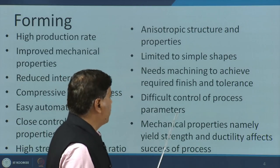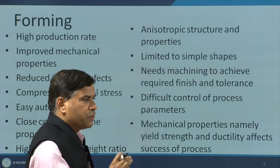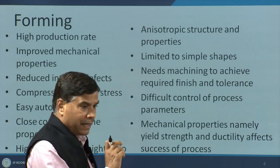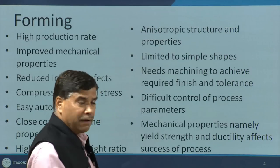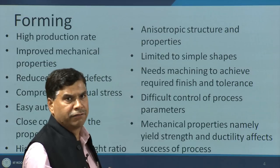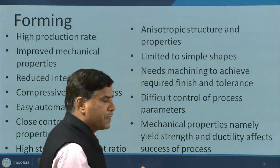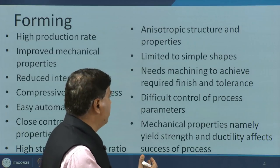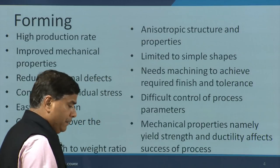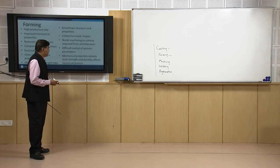Difficult control of process parameters is another limitation since the process is deformation based. We need to control the temperature of the metal being deformed and the rate at which it is being deformed. Inappropriate control over temperature and rate of deformation will lead to the development of surface defects on the component being made, which will simply lead to rejection or a product with undesirable characteristics and properties.